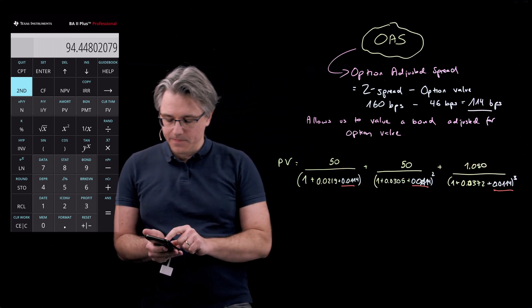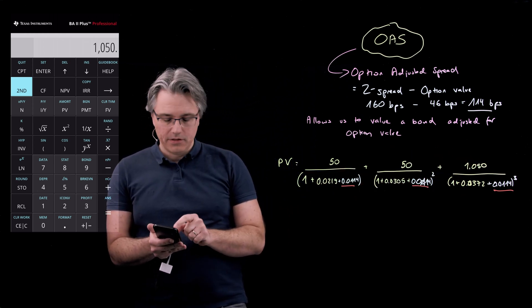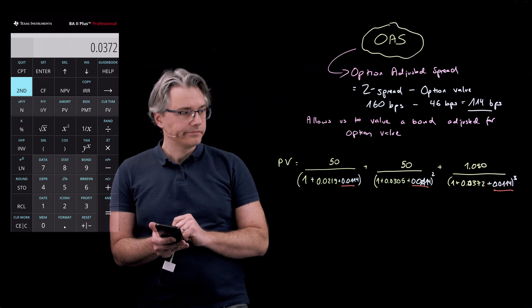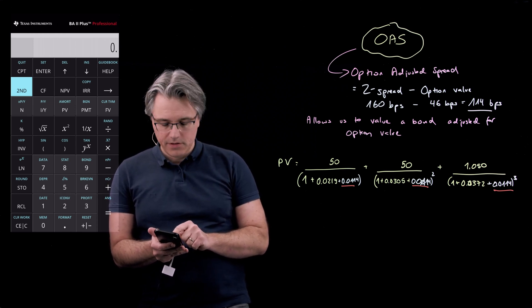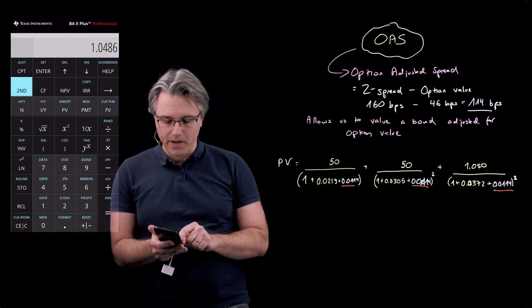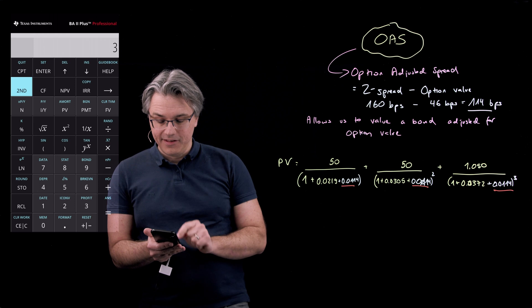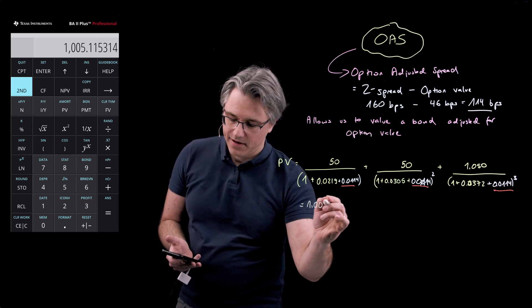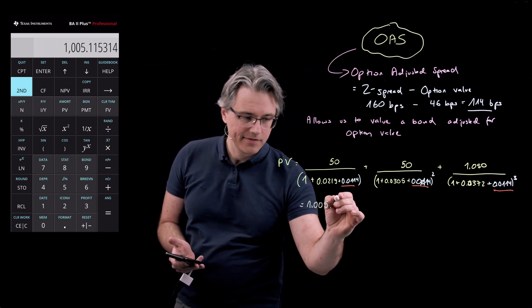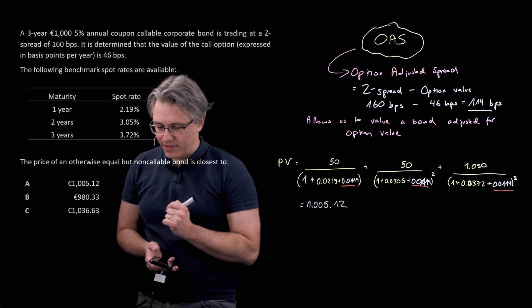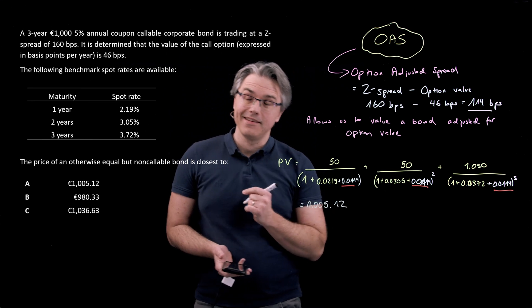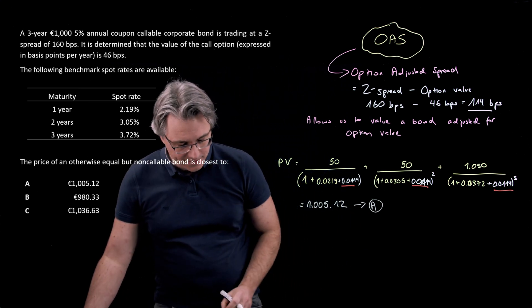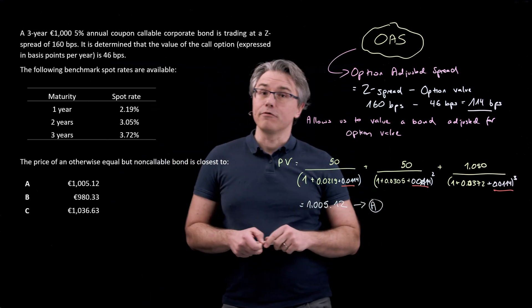And then, this 1,050, divided by, once again, open the bracket, 1 plus 0.0372, plus 0.0114, close bracket, to the power of 3. Let's hit the equals key, and I see an outcome or an answer of 1,005 point, roughly 12. If we check this against the answers or the potential possible answers to the problem, we see that this corresponds very nicely with answer A.